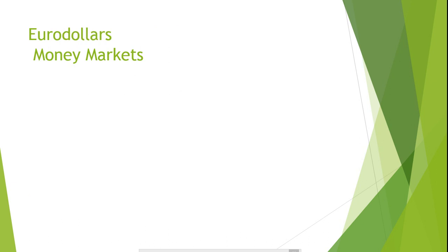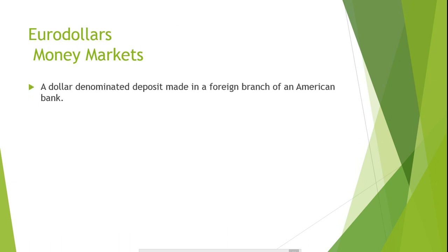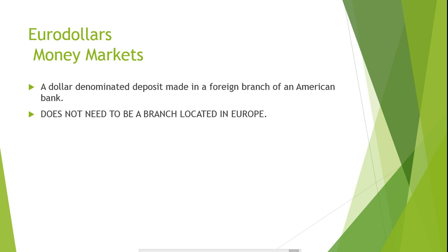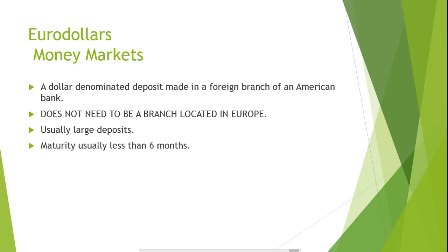A eurodollar is a dollar-denominated deposit made in a foreign branch of an American bank. Banks locate their branches outside of the United States to avoid regulation by the Federal Reserve Board. Although they are called eurodollars, they do not need to be deposited in European banks. Most eurodollar deposits are large and are time deposits with maturities of less than six months. One variation is the eurodollar certificate of deposit — a eurodollar CD is an American bank CD issued in a non-U.S. branch, usually in London. Holders can sell eurodollar CDs before maturity if needed. Eurodollar CDs are considered riskier than domestic CDs; however, they also offer a higher return. Firms also sometimes issue eurodollar bonds — dollar-denominated bonds sold outside the U.S.